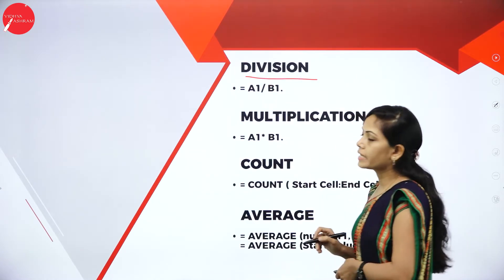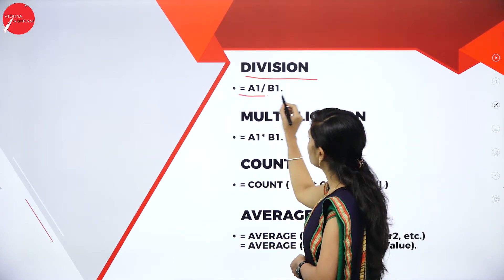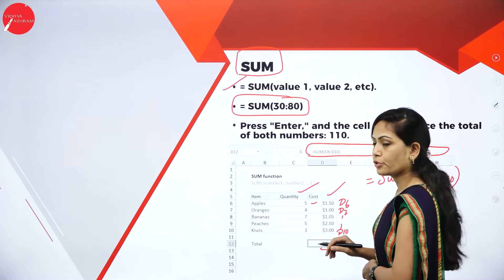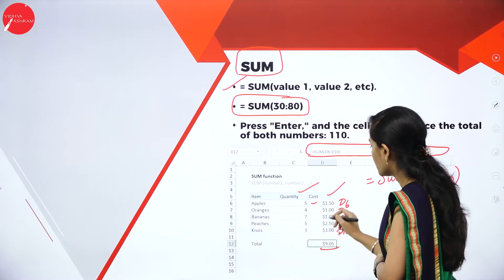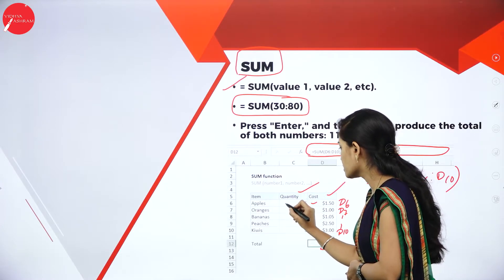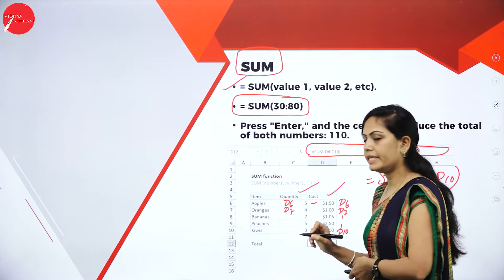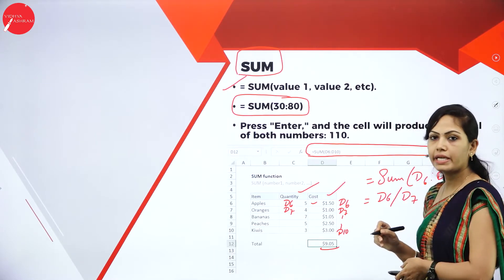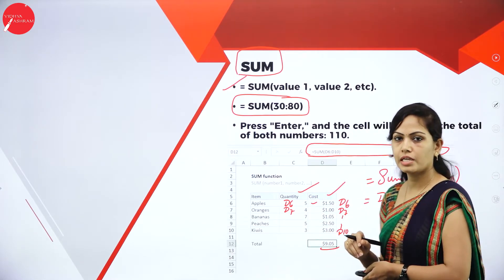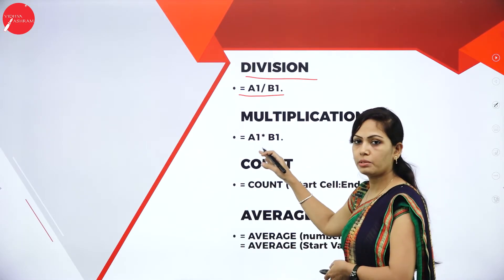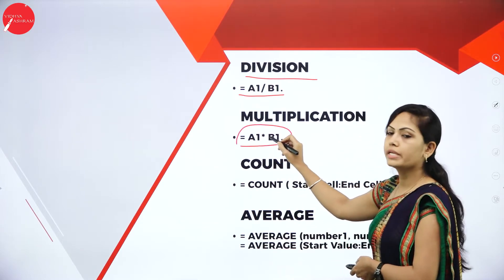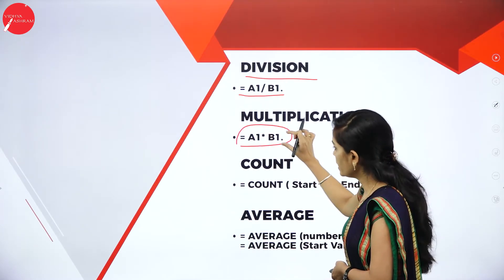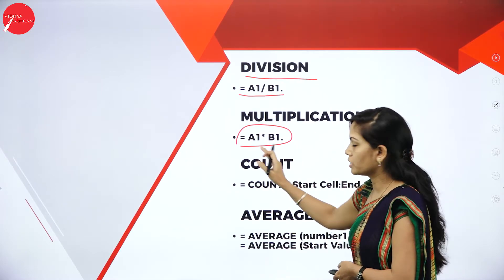For division, the syntax is =A1/B1, where A1 and B1 are cell addresses. For example, the cell address of 5 is D6 and 4 is D7, so use =D6/D7 to get the division value. For multiplication, the syntax is =A1*B1 — A1 into B1. You need to write the cell addresses of the numbers you want to multiply.